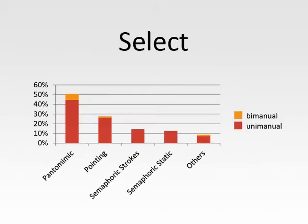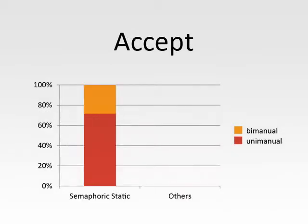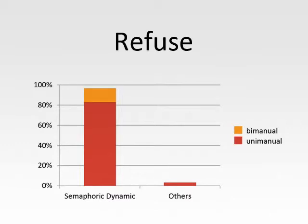We analyzed these gesture types with respect to the 10 most present gesture functions. Our results show that selection is mainly done by pantomimic acting and pointing. Releasing is performed by pantomimic acting and semaphoric strokes. Accepting is only performed by semaphoric static gestures, while refusing is mostly done using semaphoric dynamic gestures.